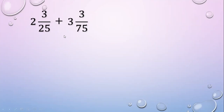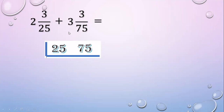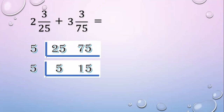Let's use continuous division. List the denominators: 25, 75. Then divide by a prime common factor — 5. 25 divided by 5 equals 5; 75 divided by 5 equals 15. Then 5 and 15 have a common factor of 5. 5 divided by 5 equals 1; 15 divided by 5 equals 3.